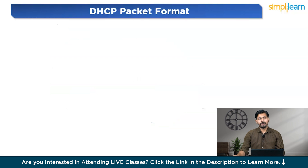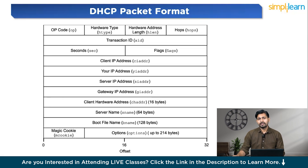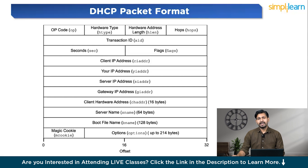Now let's understand the DHCP packet format. It consists of several fields, each serving a specific purpose in assigning IP addresses and network information to the client. The hardware length is an 8-bit field that indicates how long the physical address, like the MAC address, is in bytes — for Ethernet, the value is 6 bytes. Hop count is another 8-bit field that limits how far the packet can travel across the network, defining the maximum number of hops allowed. The transaction ID is a 4-byte field holding a unique number created by the client to match requests with the correct replies.